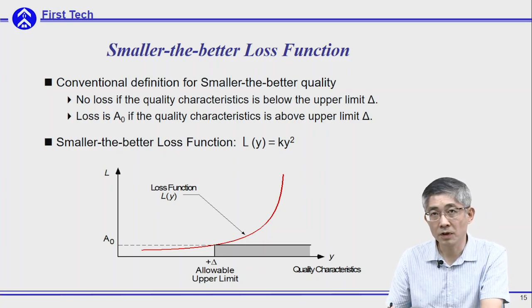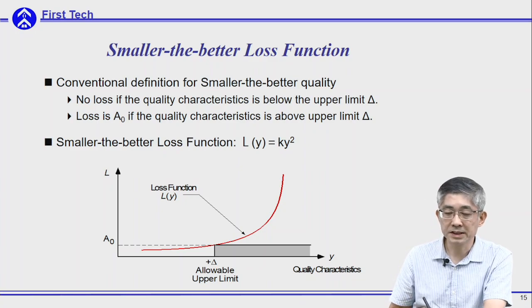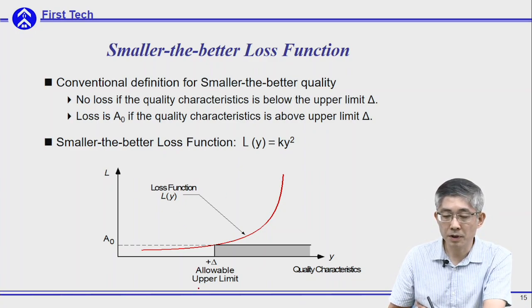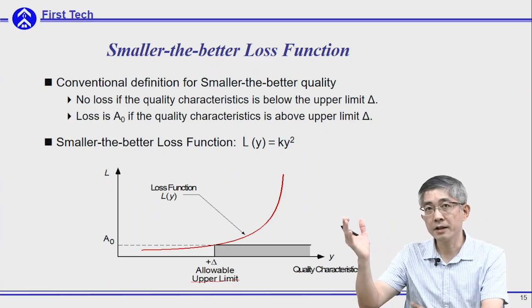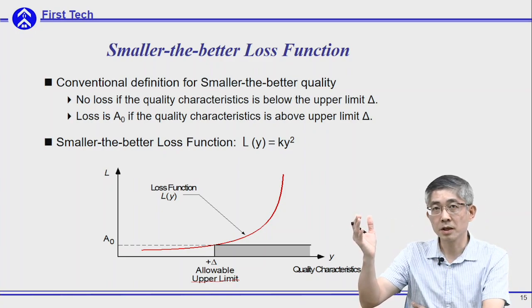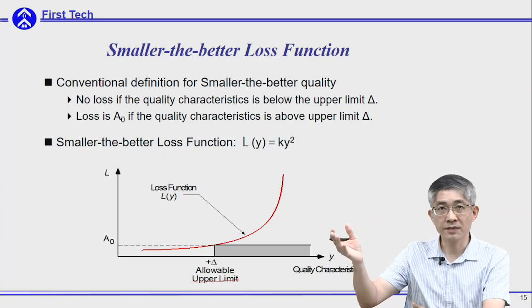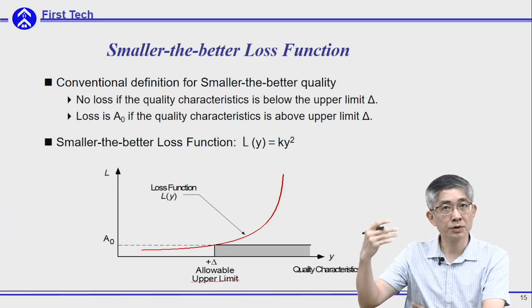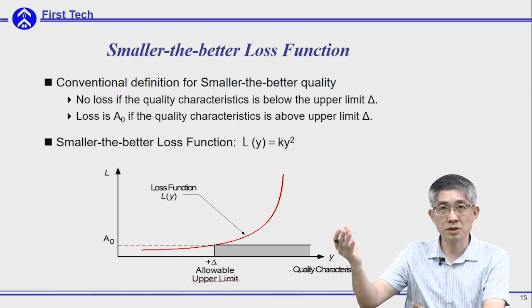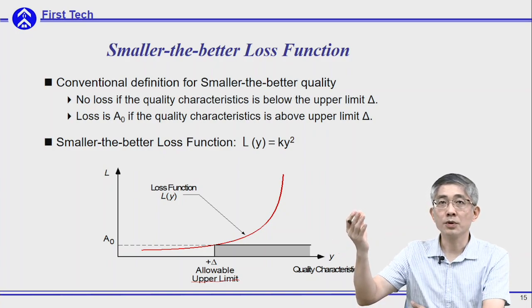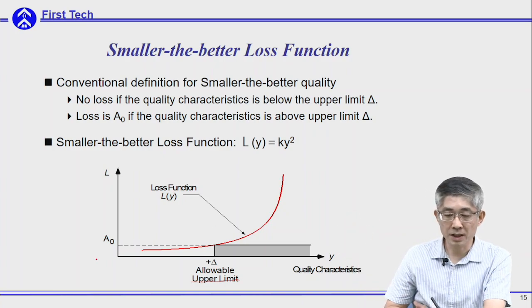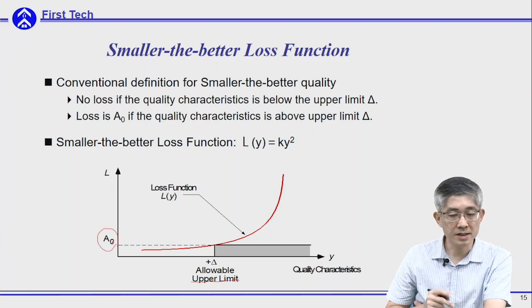Anything higher than the upper limit needs to be either disqualified or refurbished. We assume the loss associated with this modification will be A₀.